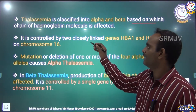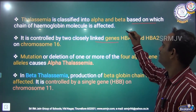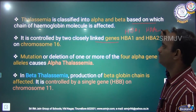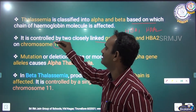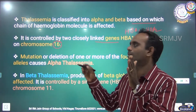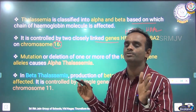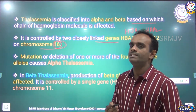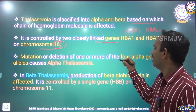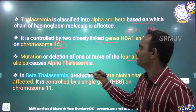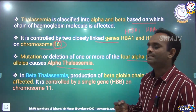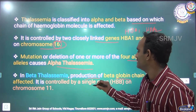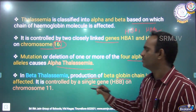This is controlled by 2 closely linked genes: hemoglobin A1 and hemoglobin A2 on chromosome number 16. Here the defect takes place in the 16th pair. Mutation or deletion of one or more of the 4 alpha gene alleles causes alpha thalassemia. In beta thalassemia, the production of beta globulin chain is affected, and it is controlled by a single gene HBB on chromosome number 11.